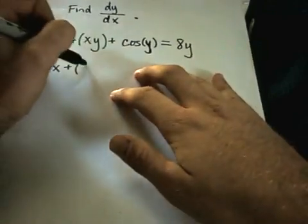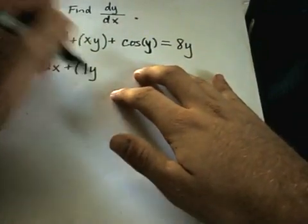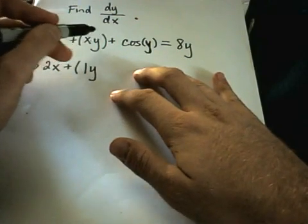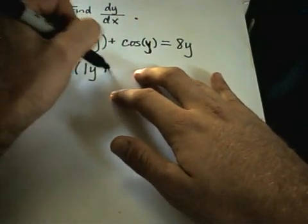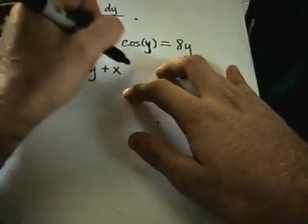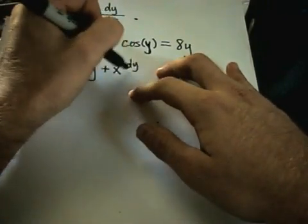So if I take the derivative of x, I just get 1, I'll leave the y alone. I don't need a dy dx, because I didn't take the derivative of the y piece yet. Plus, now I'll leave the x alone, and the derivative of y is 1 dy dx.